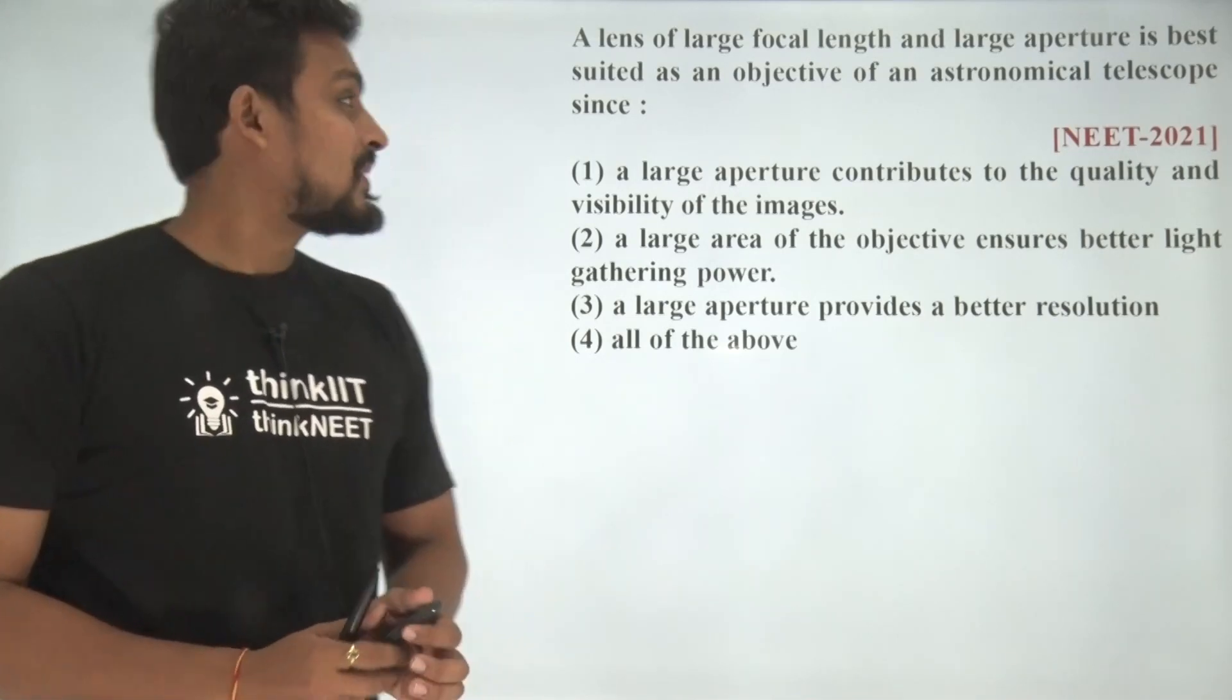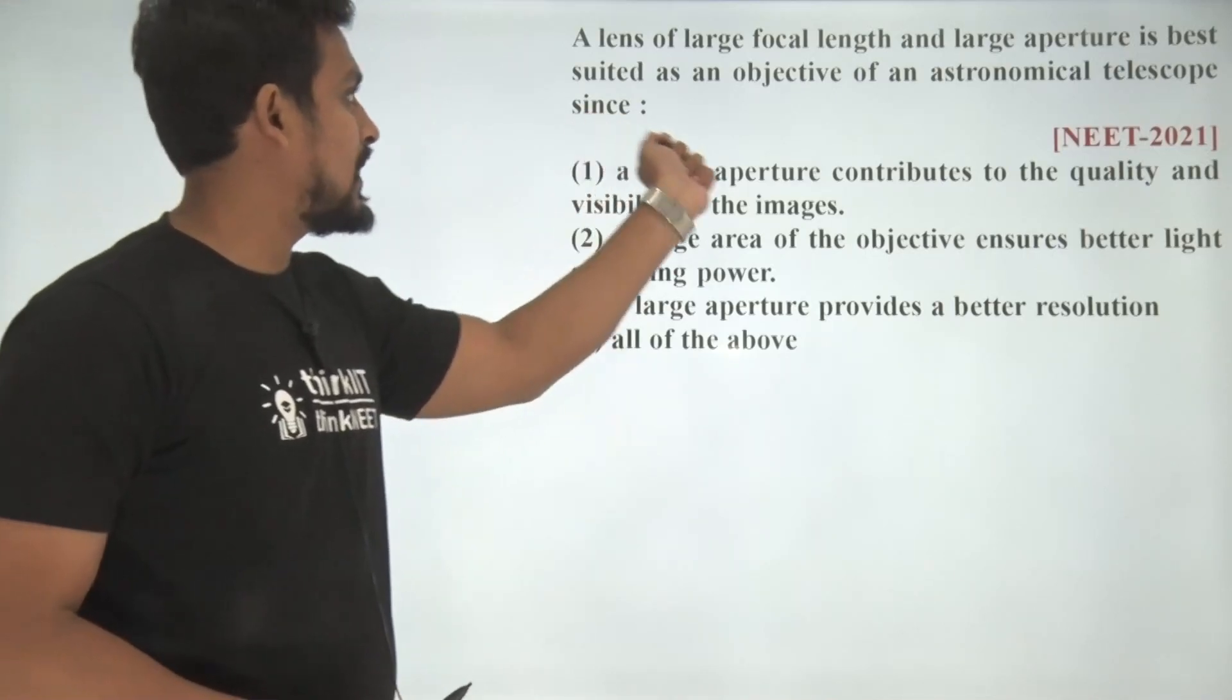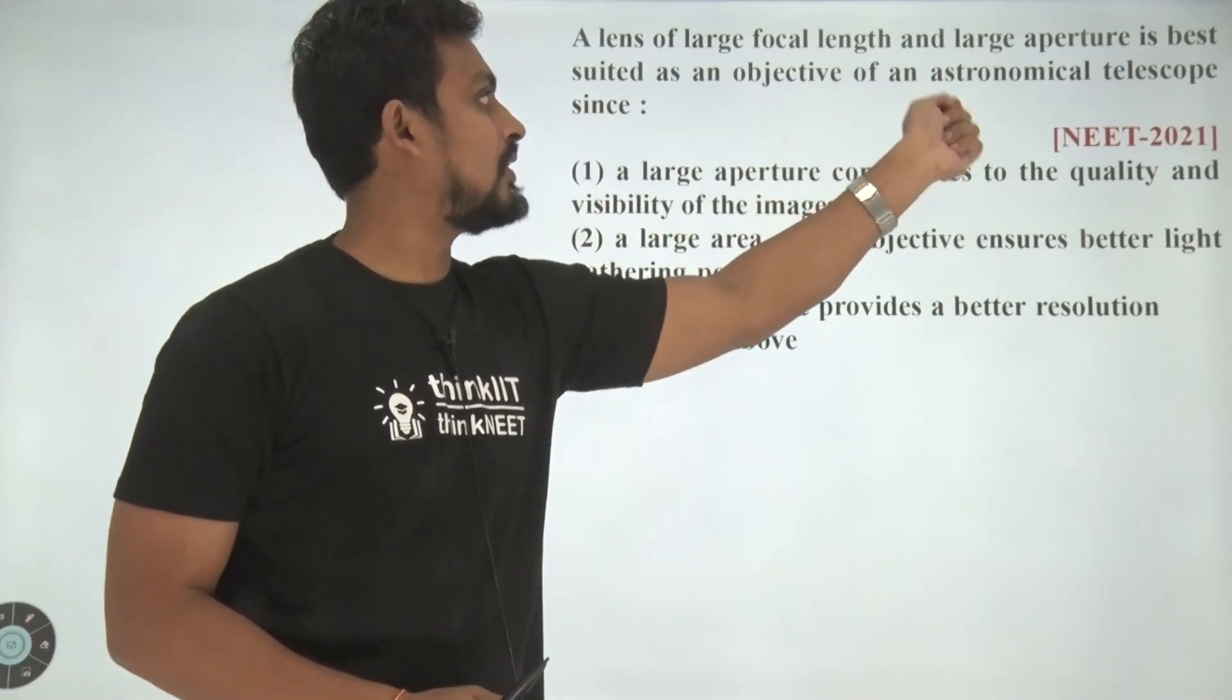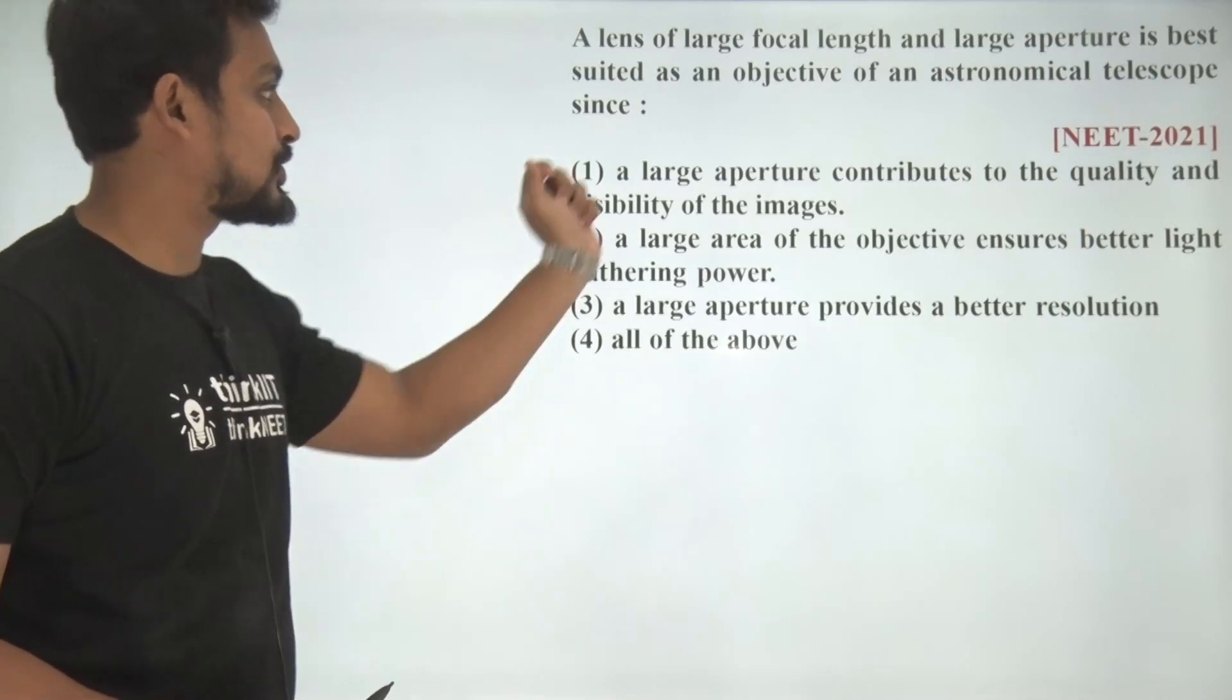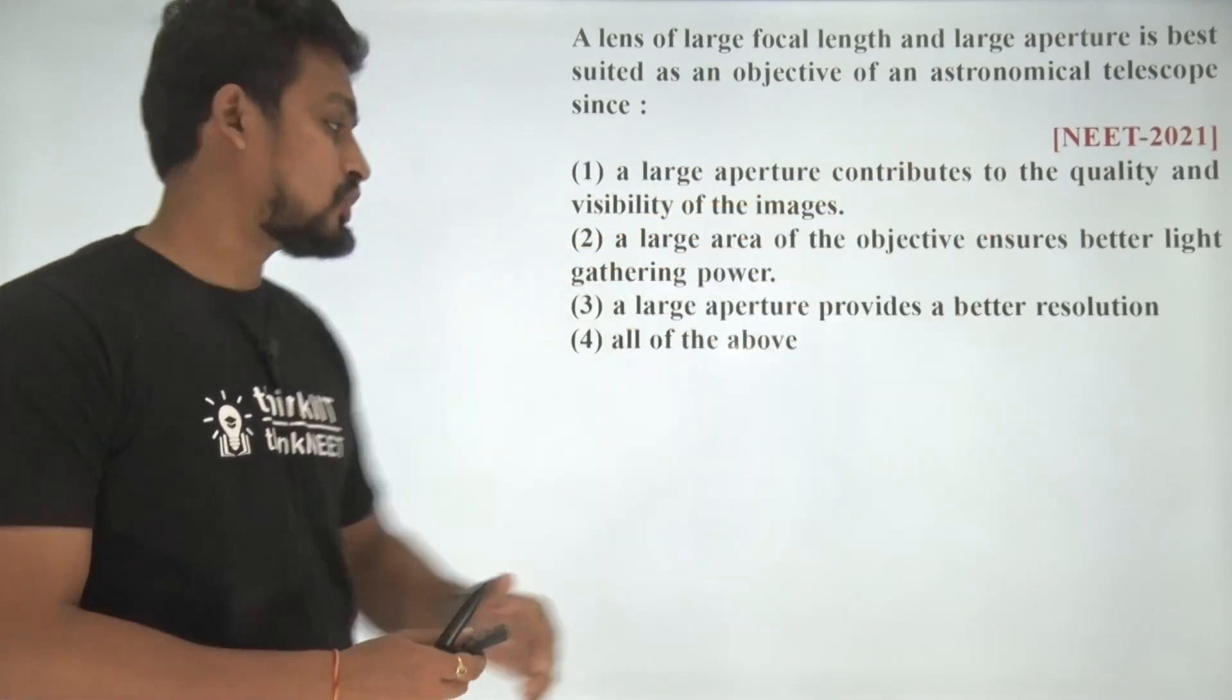Let's see the next question. A lens of large focal length and large aperture is best suited as an objective of an astronomical telescope since. We are talking about telescope.